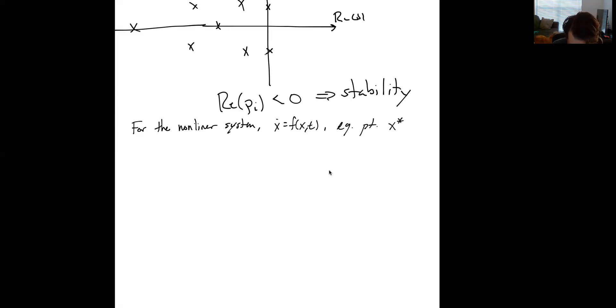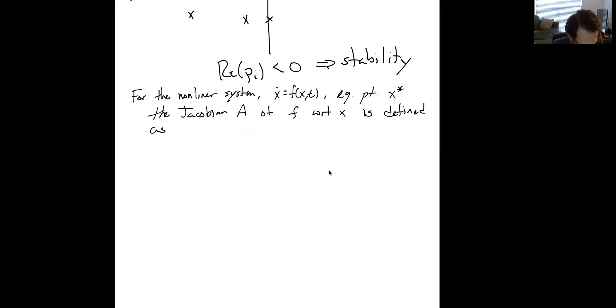The Jacobian, let's call it A, of f with respect to x is defined as, we've seen this before. A is equal to partial derivative of f with respect to x, all evaluated at x equals x star.